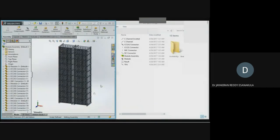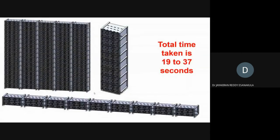The main advantage: the total time taken is 19 to 37 seconds for executing this entire task. This is highly difficult for a human — to do this entire assembly and modeling would take at least one day. But the system does it in just 19 to 37 seconds. The range exists because customer requirements vary: 19 seconds is the fastest, 37 seconds is when it took more time for a more complex requirement.